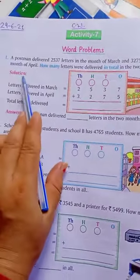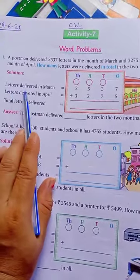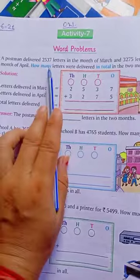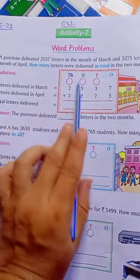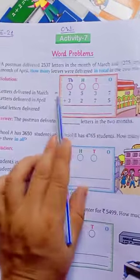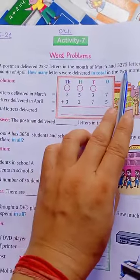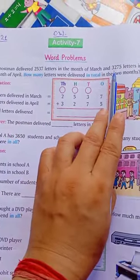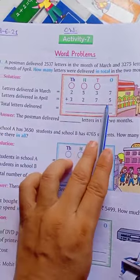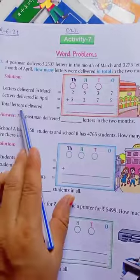So what will we do? In solution, you have given letters delivered in March. How many letters delivered in March? 2,537. So, write here 2,537. Okay. And in the month of April, delivered letter 3,275. So, write here 3,275.